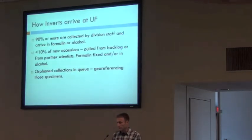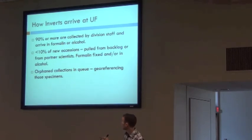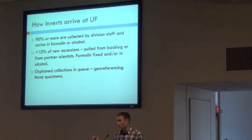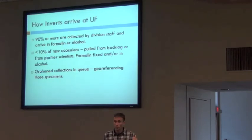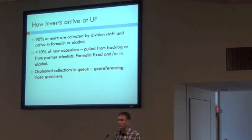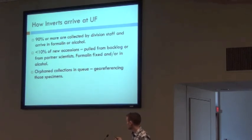How do inverts arrive at UF? Ninety percent or more are collected by division staff and processed in the field the way just described, arriving in formalin or alcohol. Ten percent or so of new accessions are pulled from the backlog or received from departments of science, fixed in formalin and/or in alcohol. For geo-referencing, most of their modern field work is done with GPS devices, but they also have large amounts of orphan collections they'll be dealing with in coming years and will probably become a client of GEOLocate for geo-referencing those legacy specimens.